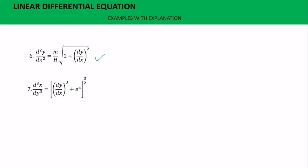For example six, the order is three and the degree of that order is one — please don't mistake the order for the degree. The degree is the exponent of the highest order, the order is three but the degree is one. So this is also a linear differential equation. Pause and try example seven — is it linear or non-linear?